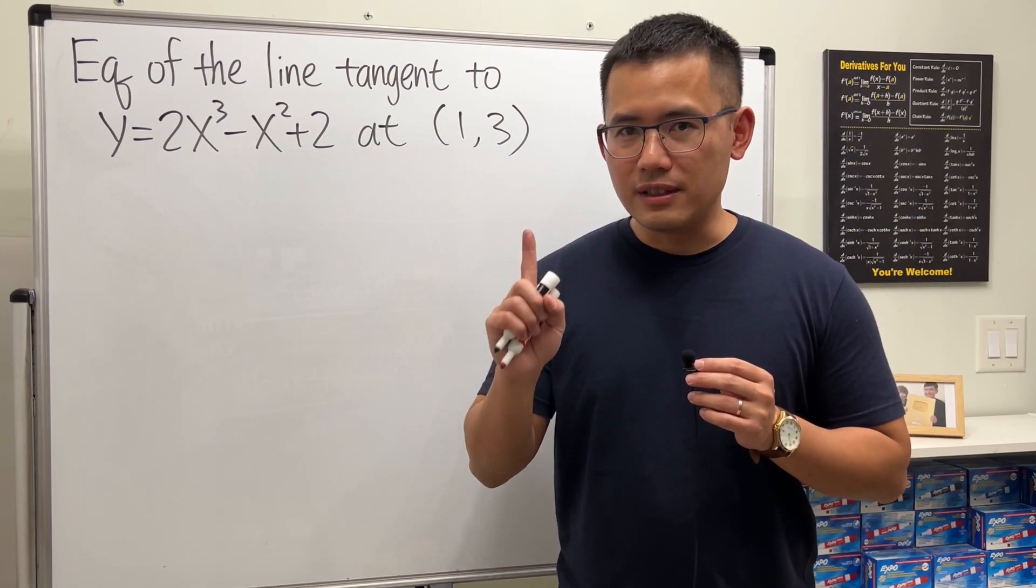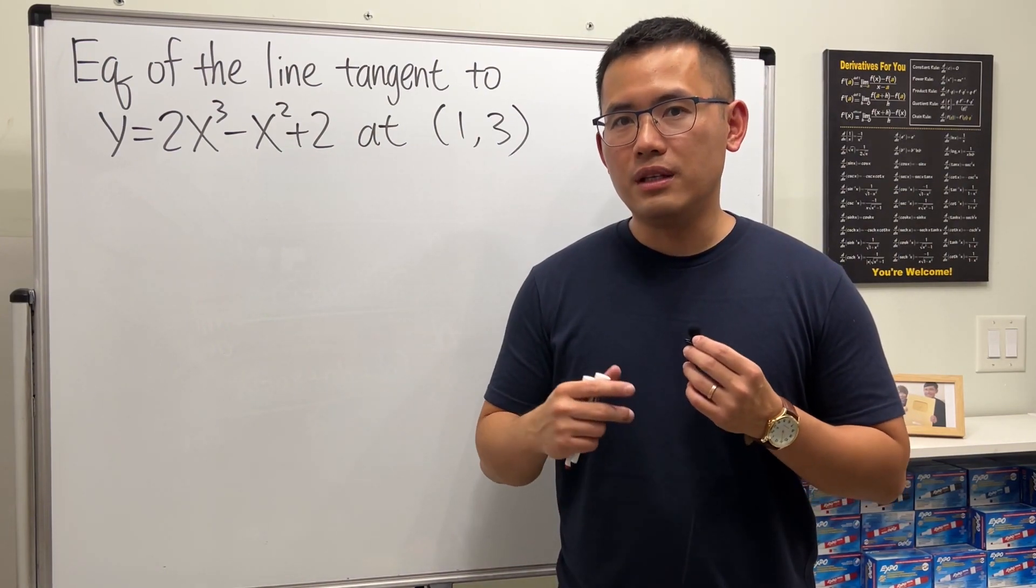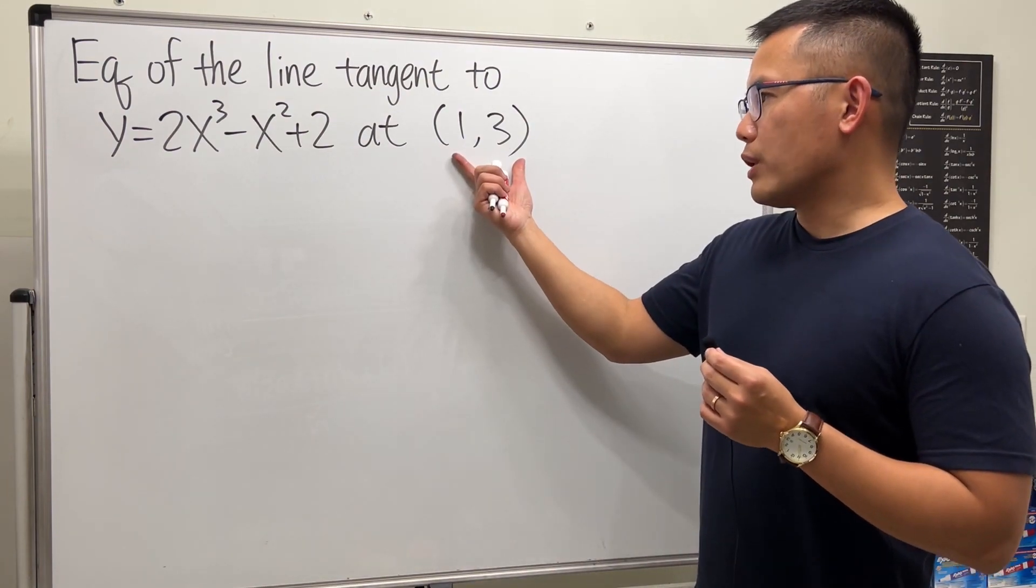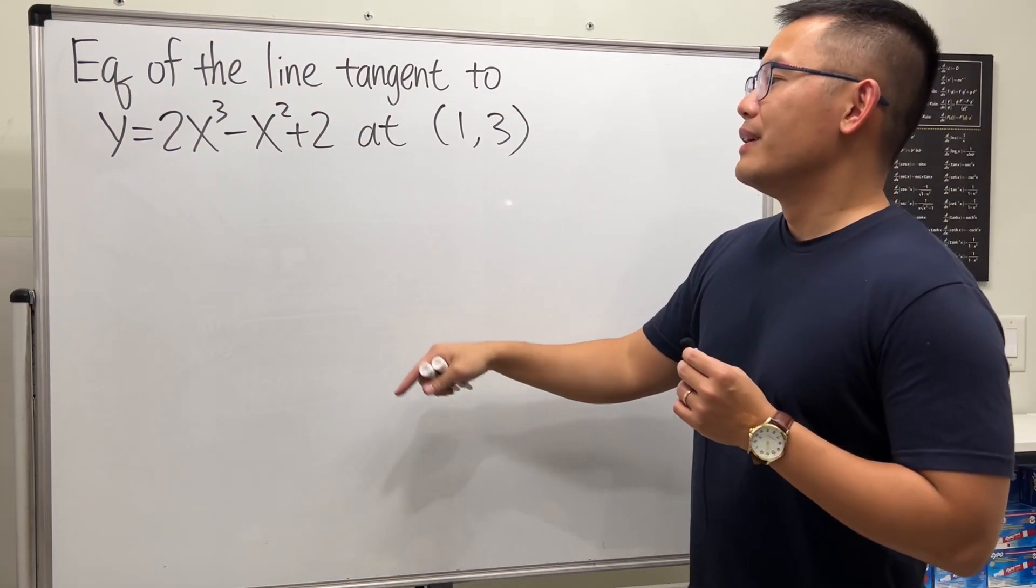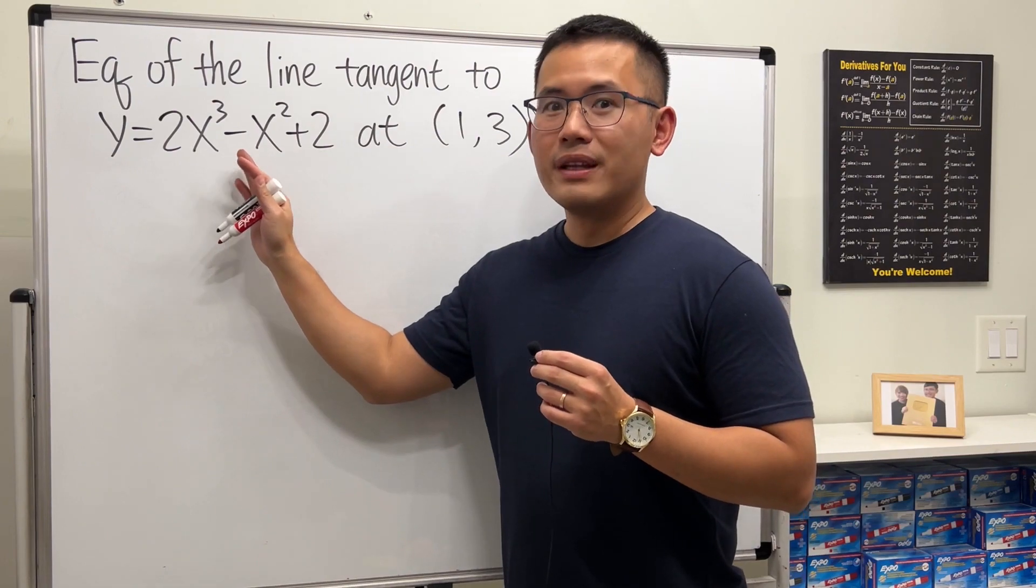We need two things: the first is the slope, and second is that we need a point. We have a point right here already—that's good. Now we have to find the slope.